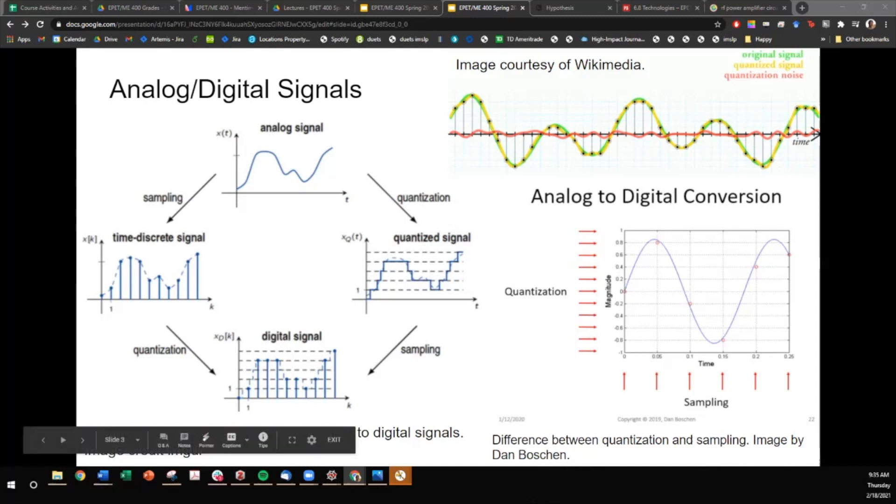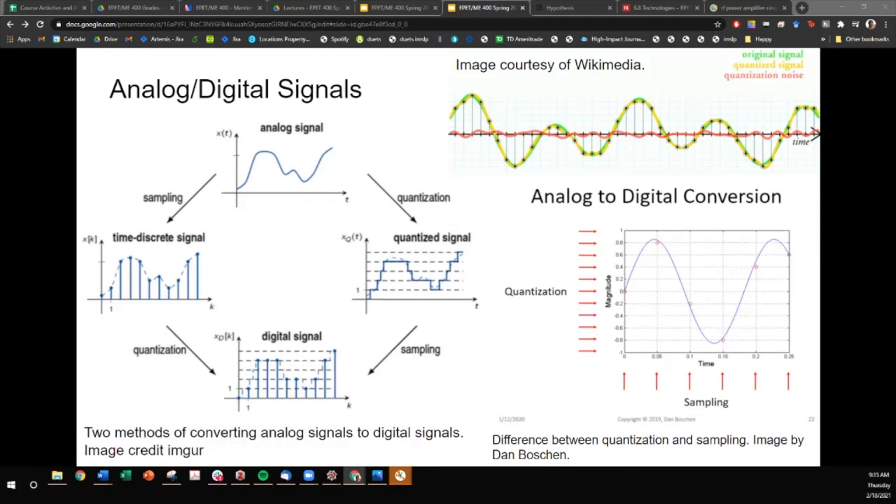There is some error that you accrue when you're converting an analog signal to a digital signal. You'll see here that the original signal is in green, the quantized signal is in yellow, and the accumulated error or the error derived from quantization is in red here.